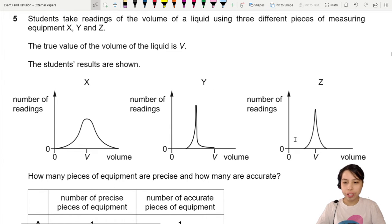So you can see in the graph here, true value V for each one. Then all the students results are shown using X, Y and Z. How many equipments are precise and how many are accurate?